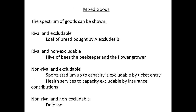We can now see our spectrum between private and public, using the criteria of whether they are rival and excludable. Pure private goods, such as a loaf of bread bought by individual A, are rival and excludable. A hive of bees that make honey is a rival good, but the flowers they visit are non-excludable, as the beekeeper cannot determine which flowers each bee will visit. The health service can be considered non-rival up to its capacity, but is excludable in that national insurance coverage is required for it to be a free service. Finally, in the case of defence, we have a pure public good, which is non-rival and non-excludable.